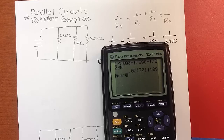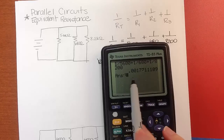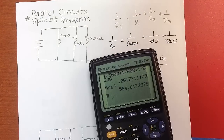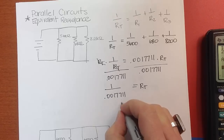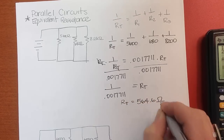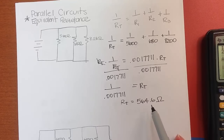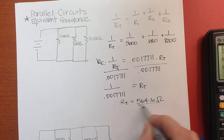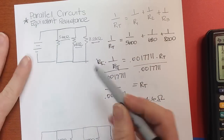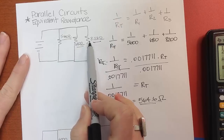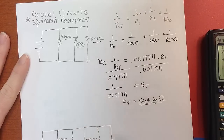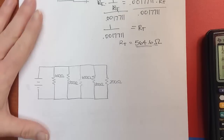Using the inverse key on the calculator — mine says 'answer' — that takes the previous result to the negative one power. I get 564, so R_T equals 564.6 ohms. Notice that the value we got for resistance is smaller than the value of any individual resistor. In a parallel circuit, the equivalent resistance is going to be less than the smallest resistor.